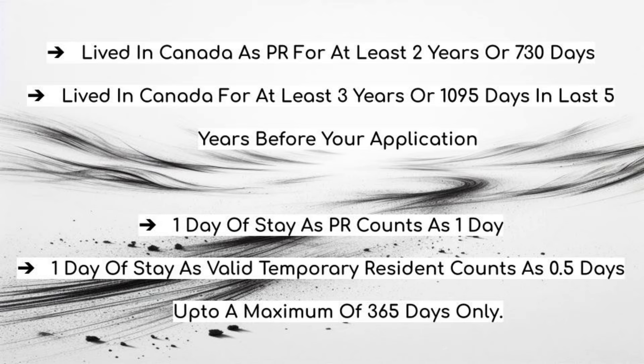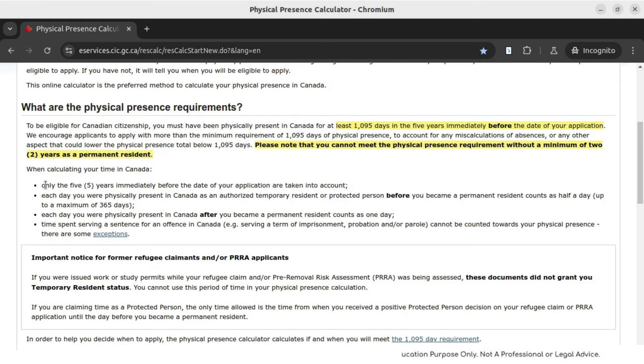I have read on many forums and many calculators that if you stay as a PR for two years, you are eligible. So there is a nuance to that criteria. Yes, you can — if you have stayed in Canada for at least two years before getting your PR, then yes, you can get your citizenship after two years as PR. So this is the basic concept I wanted to make very clear. And now we will jump straight to the calculator itself.